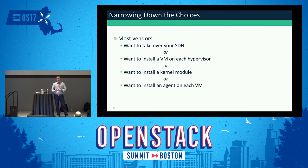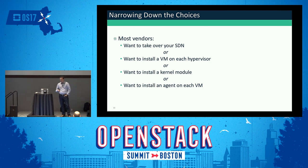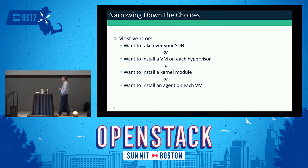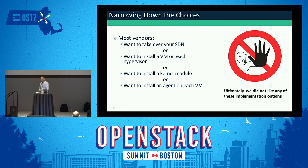Other solutions involve a kernel module — we definitely didn't want anything touching the kernel. Problems with the kernel are really bad for your cloud; we learned that the hard way. We also wanted to be able to update the kernel whenever security bulletins came out without waiting weeks for testing. Then some vendors offer an agent you install on every VM — also a viable approach, but in our OpenStack environment we don't have access to our customers' VMs, so we can't install anything there and can't require customers to either. None of these options really worked for us.